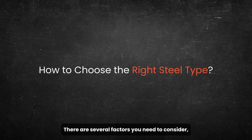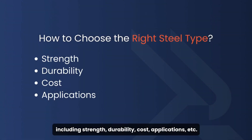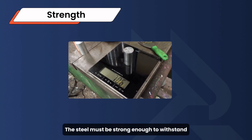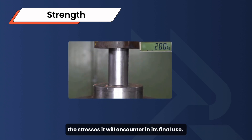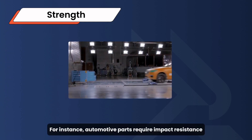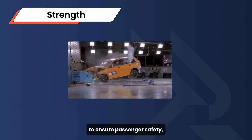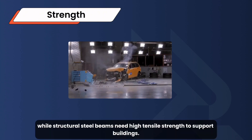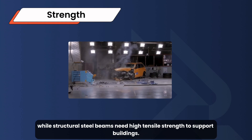How do you choose? There are several factors you need to consider including strength, durability, cost, and applications. Strength is a key factor especially for load-bearing applications. The steel must be strong enough to withstand the stresses it will encounter in its final use. For instance, automotive parts require impact resistance to ensure passenger safety, while structural steel beams need high tensile strength to support buildings.